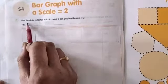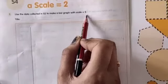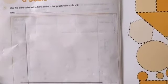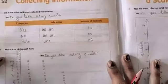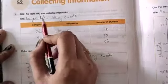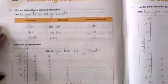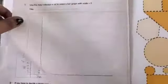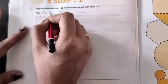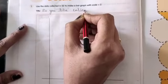So here, the first bit we have - use the data collected in S2 to make a bar graph with scale 2. So what they are saying - in S2, what information they gave us, we have to make the bar graph with that. This is S2 children, collecting information - do you like eating sweets? So with this information, now we have to make the bar graph. So here also, what we have to do is in S4 we have to write it - do you like eating sweets? This is the title, so we have to give it.